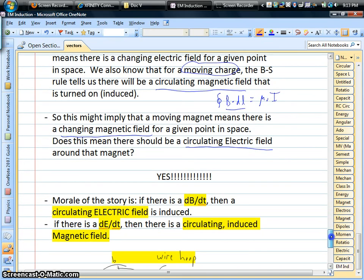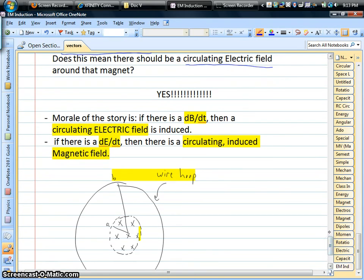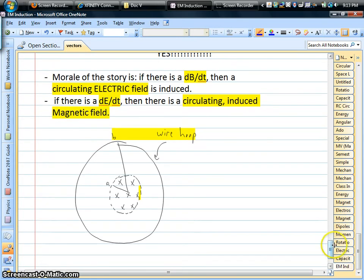So, the moral of the story is, when you change the magnetic field, an electric field turns on and circulates around those magnetic field lines. So, let's do an example. Let's see what this looks like in practice.